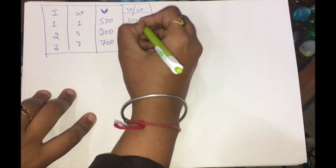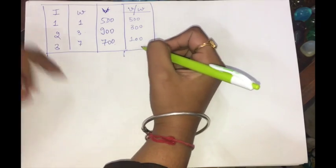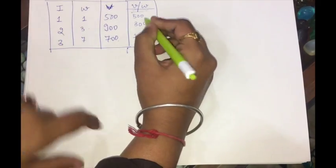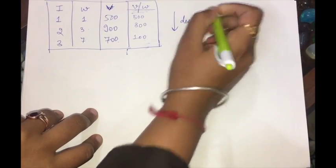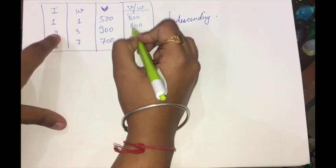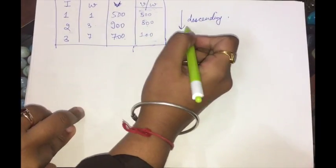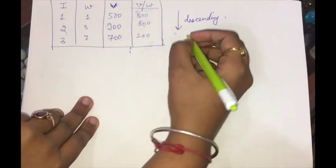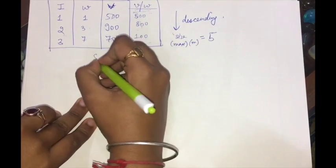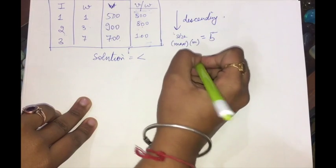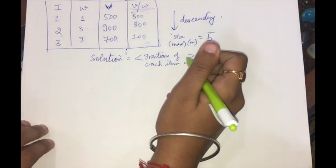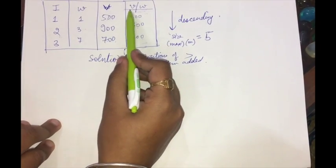To solve this using the greedy approach, we first compute the value-to-weight ratio for each item: 500/1 = 500, 900/3 = 300, and 700/7 = 100. These are already in descending order. If they were not, we would rearrange the rows accordingly. The solution set contains the fractions of each item to be added.